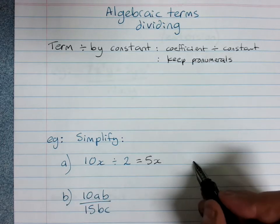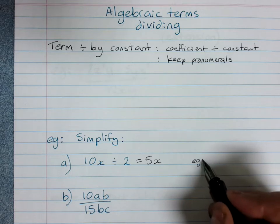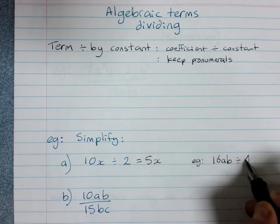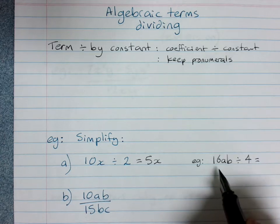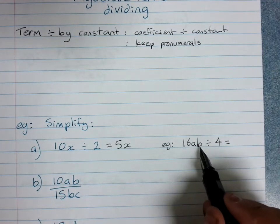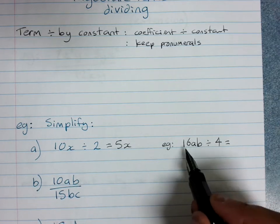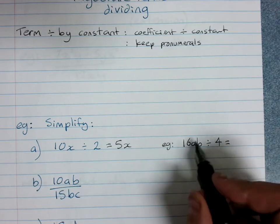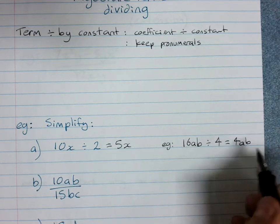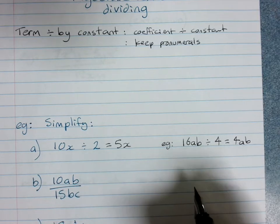Another example: if I had 16ab divided by 4—I don't know what an ab is, maybe it's an allergic banana—but we've got 16 of them dividing by 4. That would be 4 allergic bananas for everyone. 16 divided by 4 is 4, and we keep our ab because we just divide the numbers.